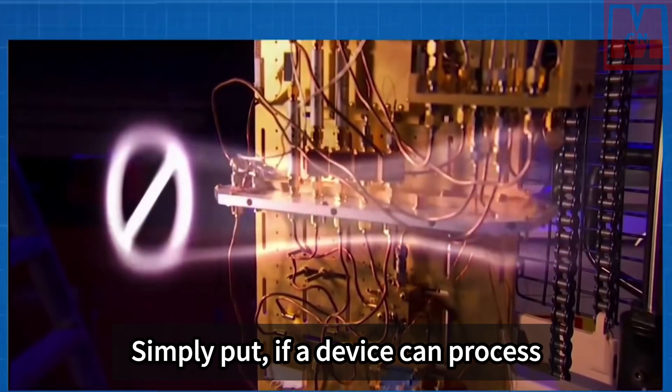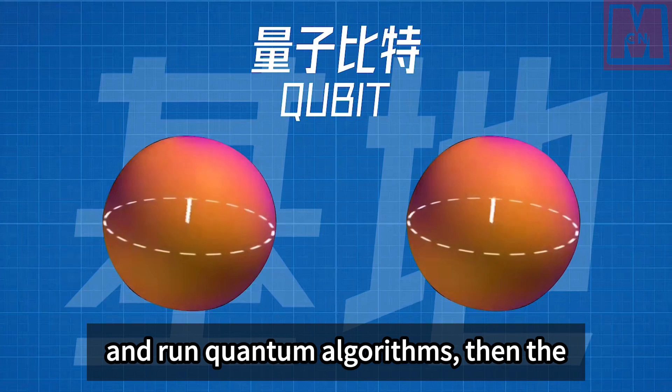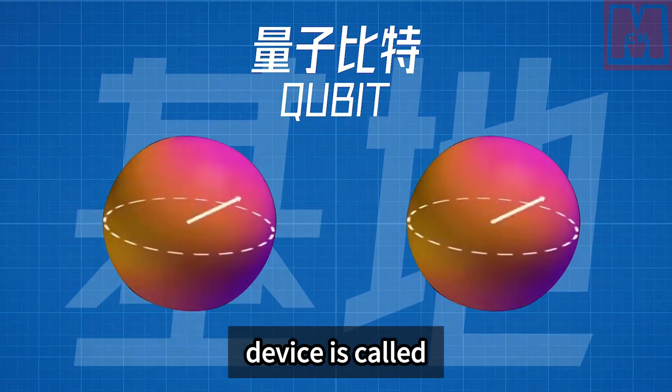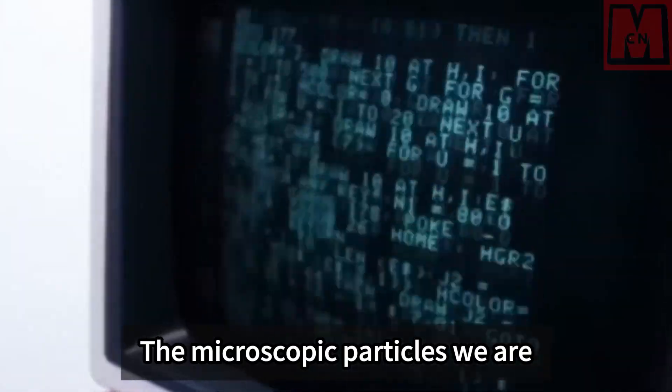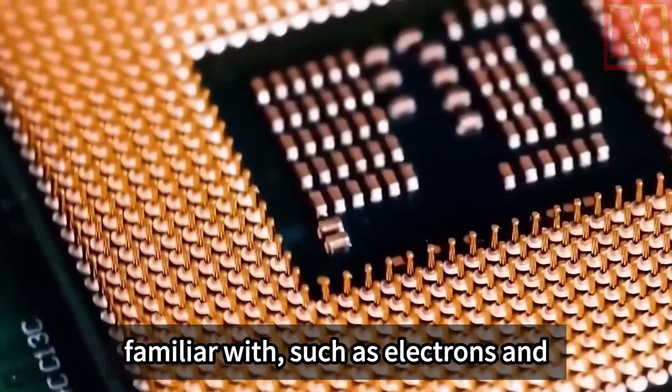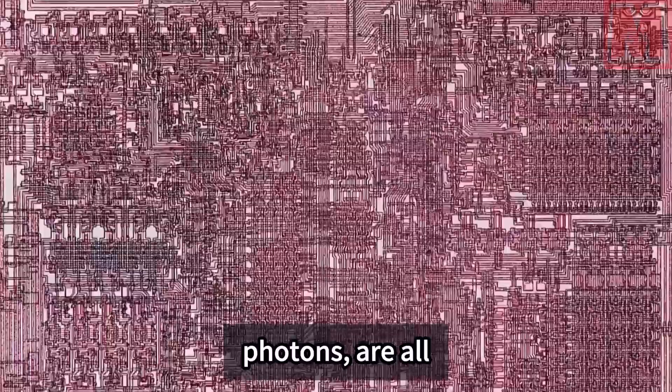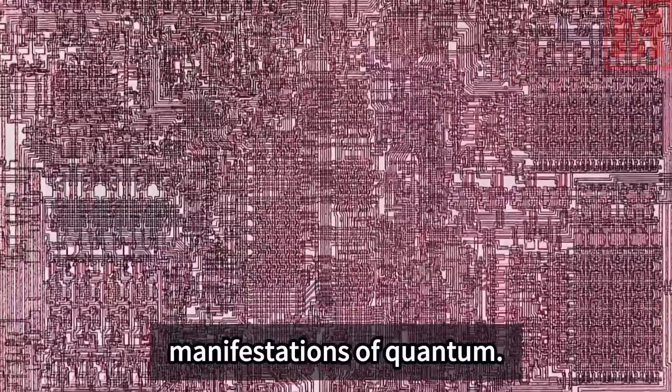Simply put, if a device can process and run quantum algorithms, then the device is called a quantum computer. The microscopic particles we are familiar with, such as electrons and photons, are all manifestations of quantum.